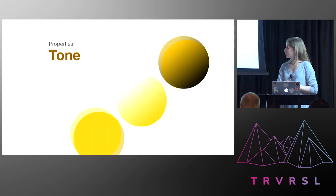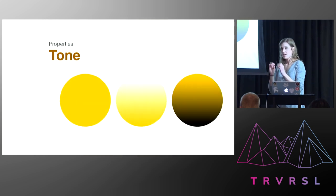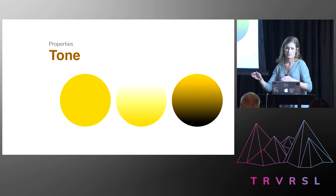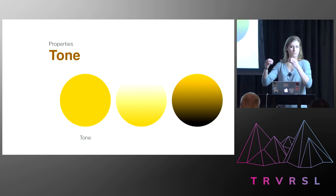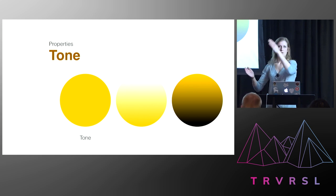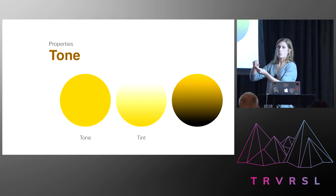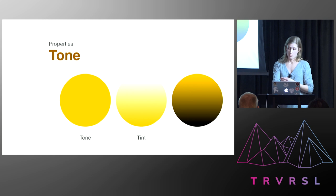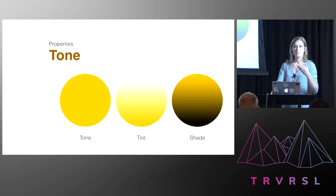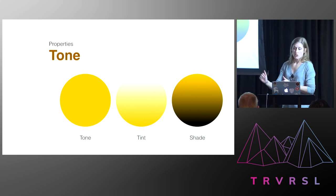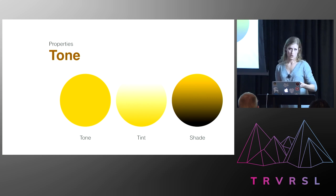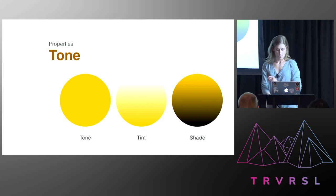Then we have tone. Tones are made by mixing a pure color with a neutral or grayscale color, and the term tone itself refers to the variation of a specific color or hue. Then we have tint — made by blending a tone or hue with white to create a lighter color. And we have shade, made by blending that tone with black or a really dark color to create a darker color. Tones, and then shades and tints are variations of tones. If you really want to be fancy, you can say tints or shades; if that's too much, you can just say tone and it's still correct.